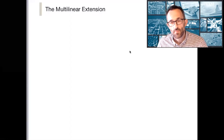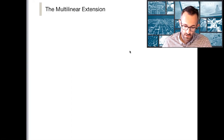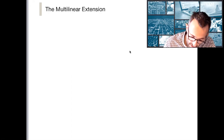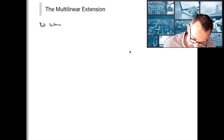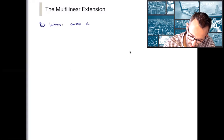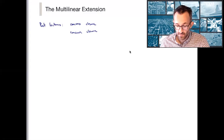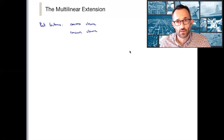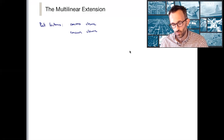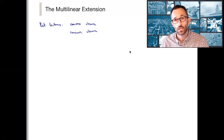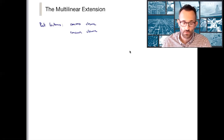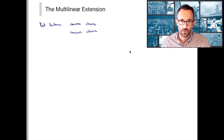We are going to continue our discussion about continuous extensions and talk about the multilinear extension. In the previous lectures we defined the convex closure and the concave closure — with the intention of minimizing or maximizing respectively. These require an exponential number of variables even to define, and evaluation requires looking at all possible convex decompositions of any point inside the unit cube to choose the one that gives us the best value. That would take exponential effort even for evaluation, let alone for minimizing.